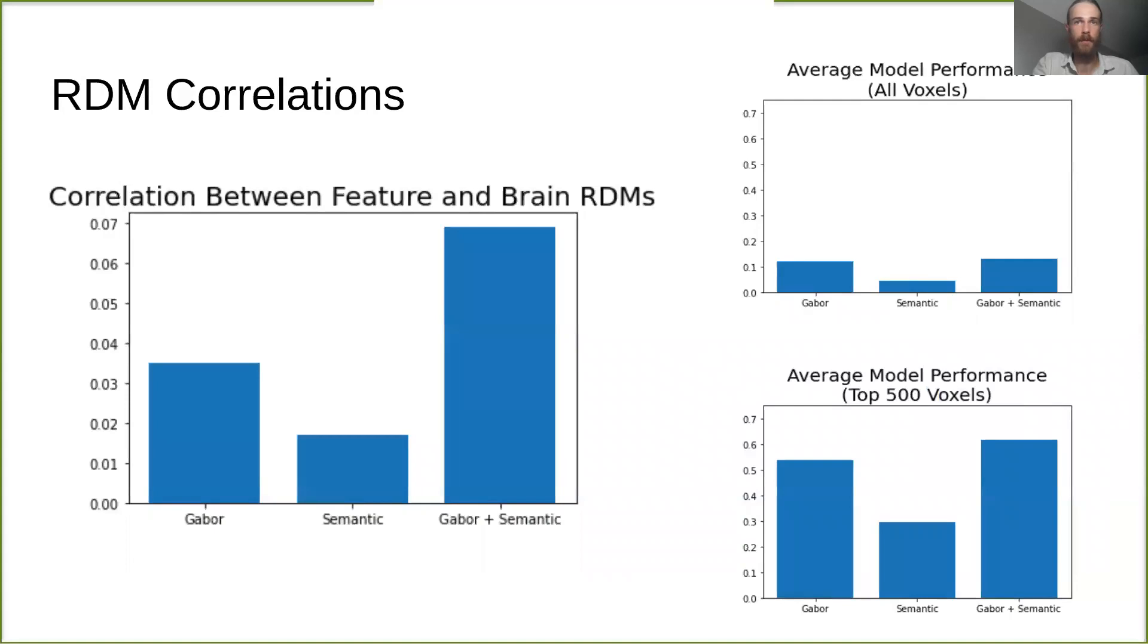Here on the left, we have bar plots displaying that correlation metric. All of the feature RDMs capture some non-zero degree of the representational geometry of the brain, and on the right we have the bar plots from previously. The similarity between relative decoding performance and relative feature brain RDM correlations suggests a potential relationship between these two metrics.